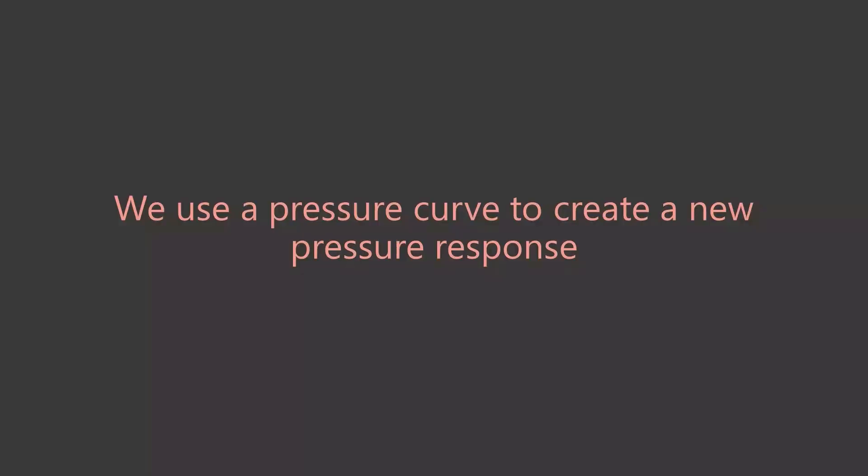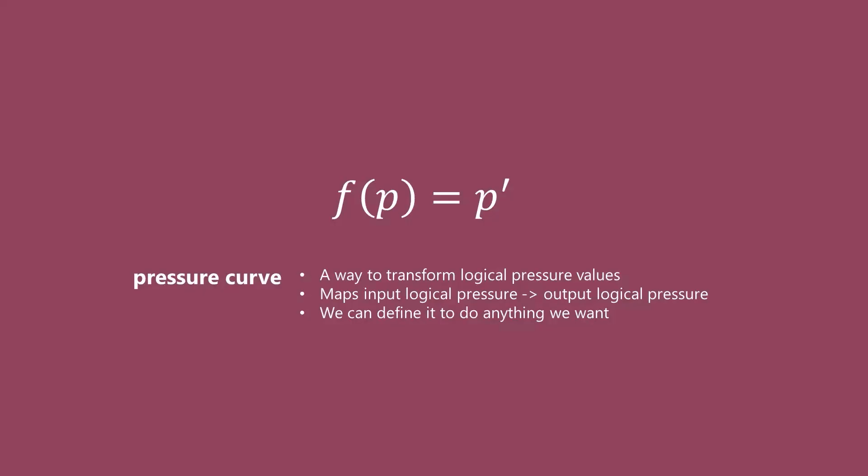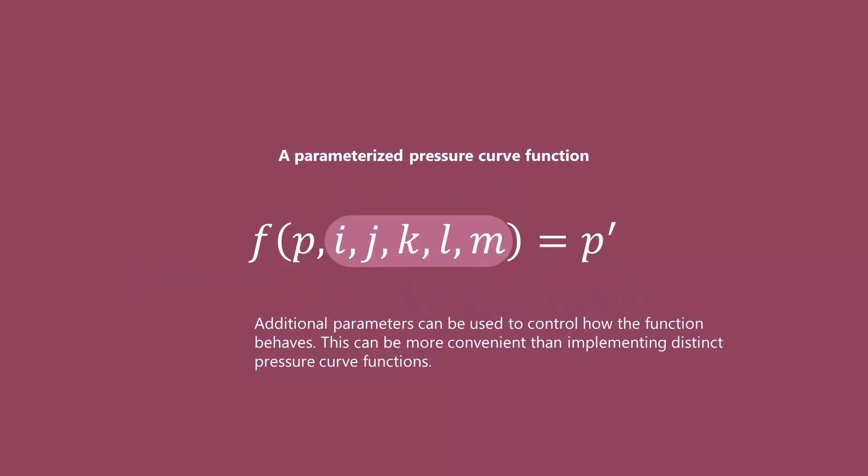So we need a new pressure response, and the way we do that is with a pressure curve. A pressure curve takes one pressure response and creates a new pressure response. Conceptually, a pressure curve is a simple mathematical function: it takes a logical input pressure p and gives out a logical output pressure p prime. Rather than having many different functions, a more typical approach is to define a single parameterized pressure curve function and tweak the parameters to get a wide variety of pressure curves. You'll see an example of a parameterized pressure curve function later in the video.